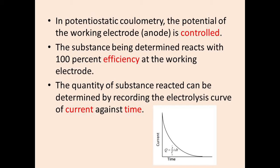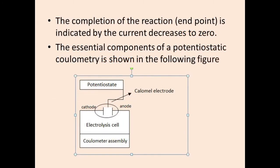The quantity is determined by recording the electrolysis curve of current against time. The curve has time on the x-axis and current on the y-axis. The completion of the reaction — the endpoint — is indicated by the current decreasing to zero.